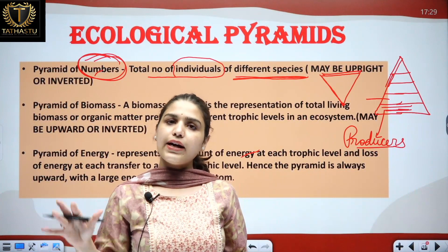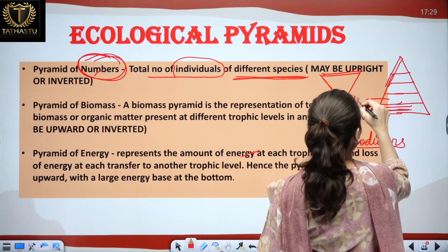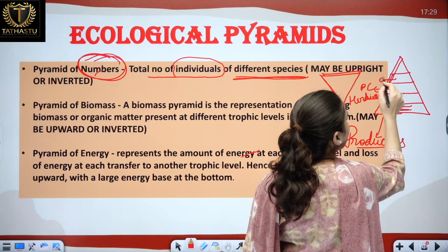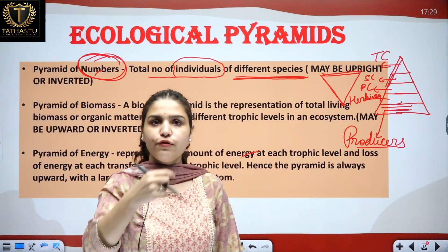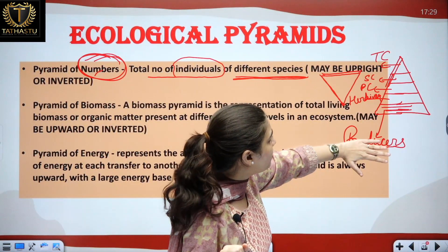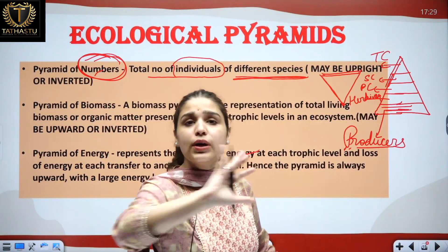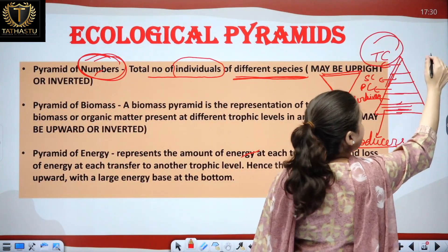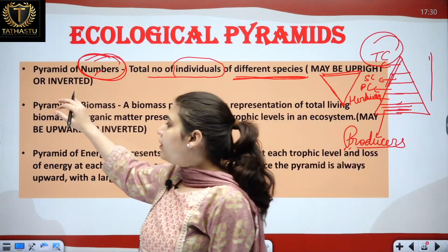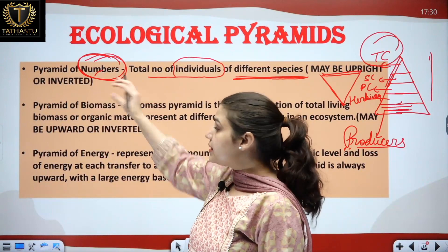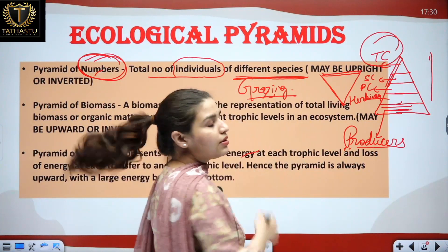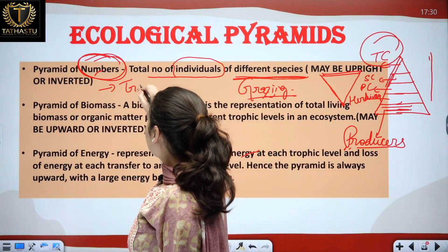Through common sense we understand that there are many plants and trees forming the producer level, but far fewer top carnivores — so numbers decrease as we move upward, making an upright pyramid. We can also have an inverted pyramid. The upright pyramid of numbers applies to grazing systems and pond ecosystems, while the inverted pyramid is related to tree ecosystems.